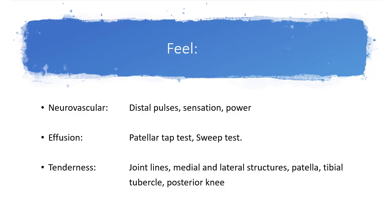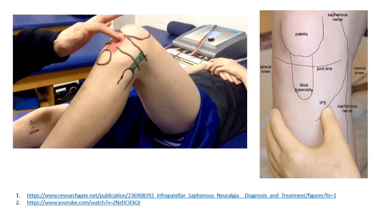Specific structures you must palpate include the medial and lateral joint lines, which are indicative of meniscus pathology. Palpate the medial and lateral structures over the patella, femur, and tibia to diagnose collateral or patellofemoral ligament injuries. Also palpate the patella itself, the patellar tendon, the tibial tubercle, and the posterior side of the knee.